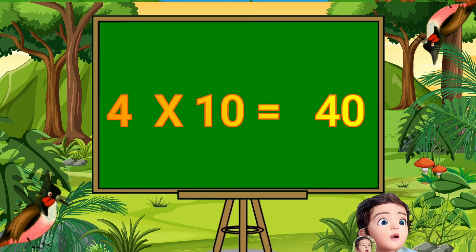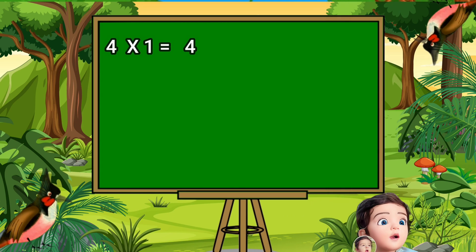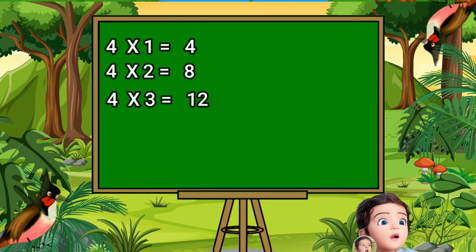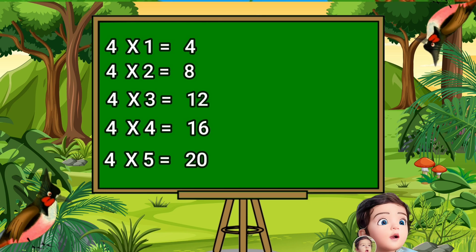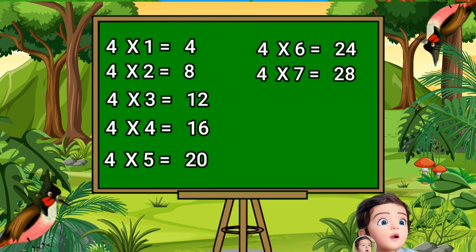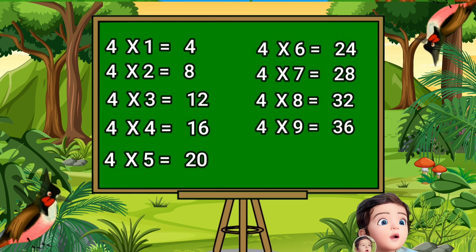Four ones are four. Four twos are eight. Four threes are twelve. Four fours are sixteen. Four fives are twenty. Four sixes are twenty-four. Four sevens are twenty-eight. Four eights are thirty-two. Four nines are thirty-six. Four tens are forty.